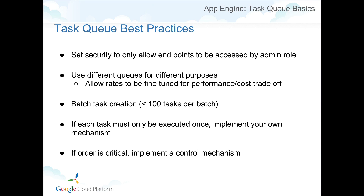Some best practices: task queue requests don't have a user associated with them, so the user API will say no one's logged in. However, these requests are treated as admin requests. If you've protected your application so that the URL being called by the task queue requires an admin user, it can also be called by the task queue. That's how you ensure random internet traffic can't trigger the task URL. As an admin, when you're logged in, you'll also be able to trigger it yourself. The best practice is to set security to only allow endpoints to be accessed by an admin role, unless you want it open publicly.